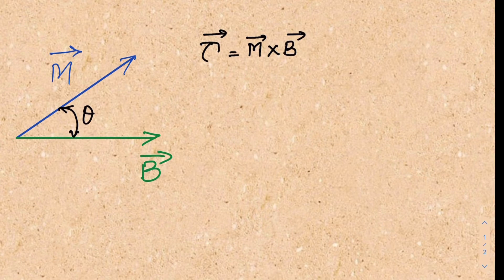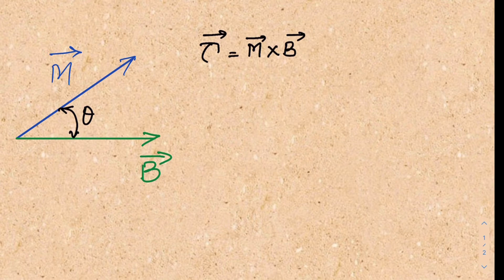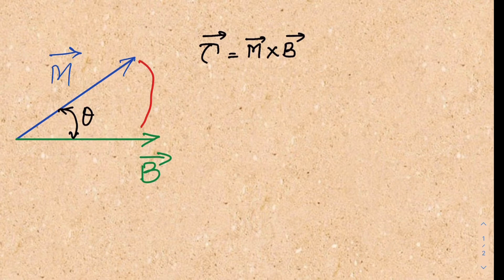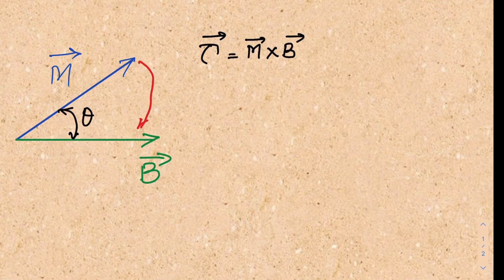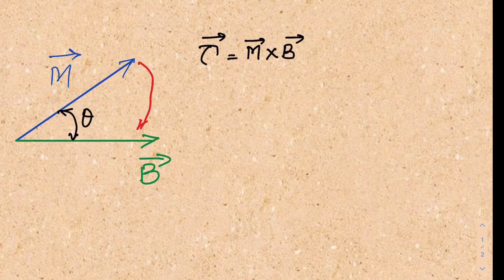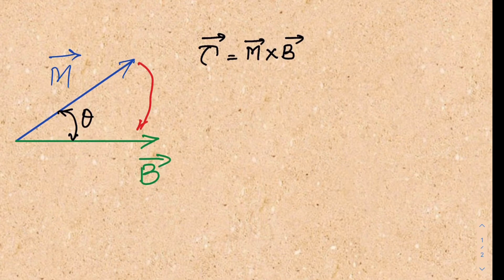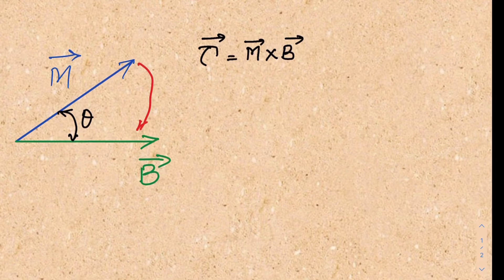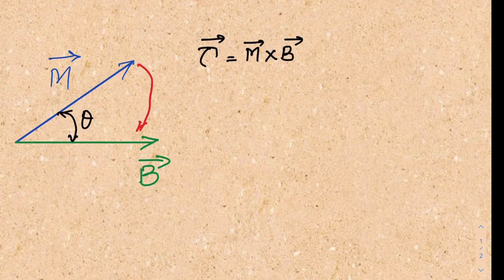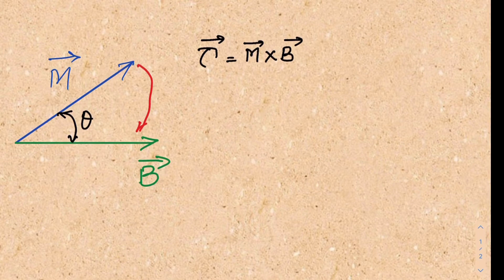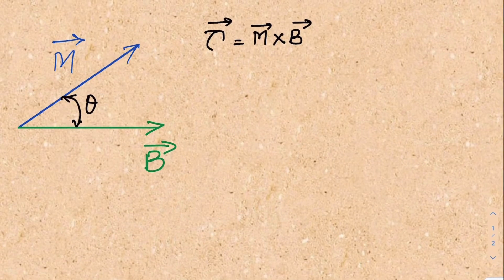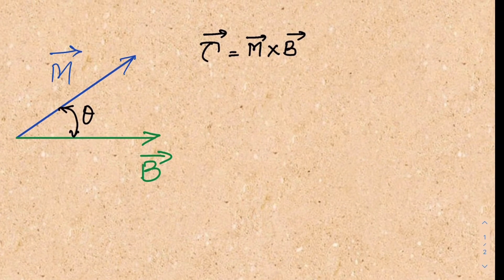In this particular case you have to go right hand from m-head to B-head. You will extend your right hand thumb, and you will observe that the torque vector points into the plane — to the left arrow into the plane. This torque vector will rotate in the clockwise direction.